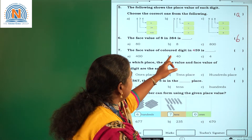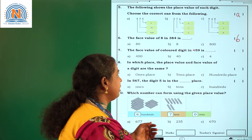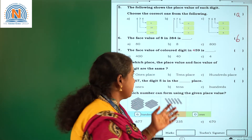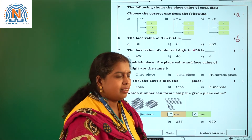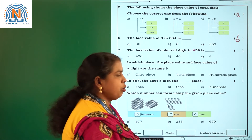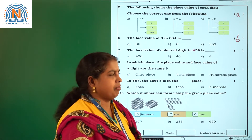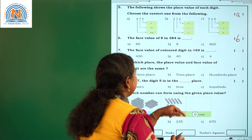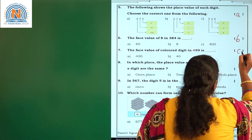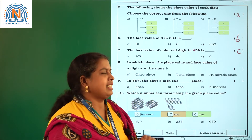The face value of the colored digit in 459 — whether it is colored, underlined, highlighted or in bold letters, the face value definition says the face value of any digit in any number is the digit itself. So the answer is 4, and the correct option is C. The face value of a digit is the digit itself.